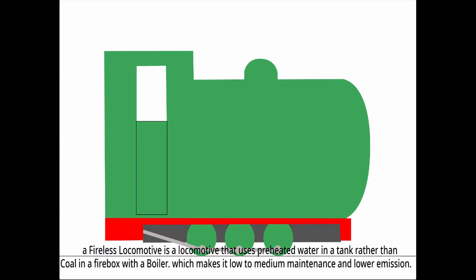A Fireless Locomotive is a locomotive that uses preheated water in a tank rather than coal in a firebox with a boiler, which makes it low to medium maintenance and lower emission.